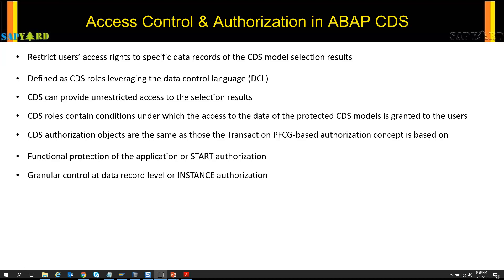Now for instance authorization, we take the same example but look within the Sales and Distribution department at different employees. If the sales department is structured by sales regions, sales employees responsible for European customers should only access European sales orders. However, sales employees responsible for USA customers are not allowed to view European customer orders, even though they belong to the same department. So both the Europe and USA employees have the same start authorization — they can both click the applications and view sales and distribution reports.